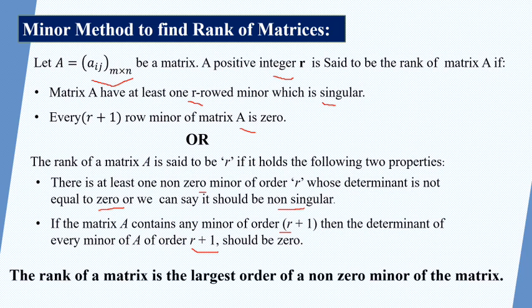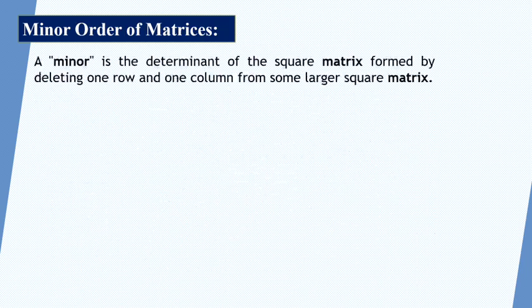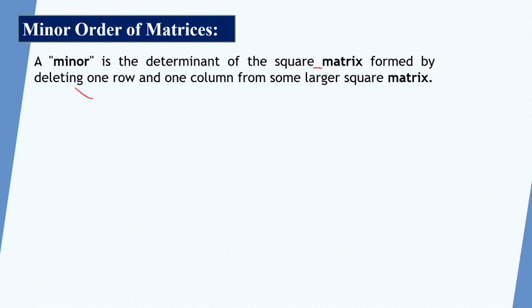The rank of a matrix is the largest order of a non-zero minor of the matrix. A minor is the determinant of the square matrix formed by deleting one row and one column from a larger square matrix. By deleting one row or one column we obtain the minor of the given matrix.